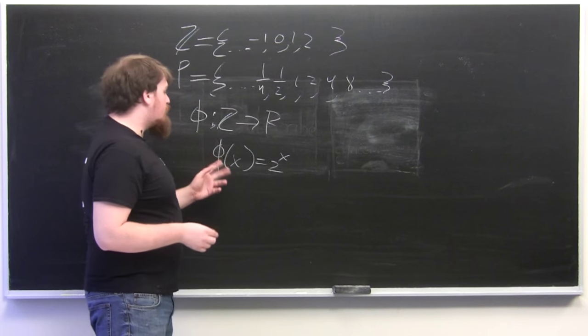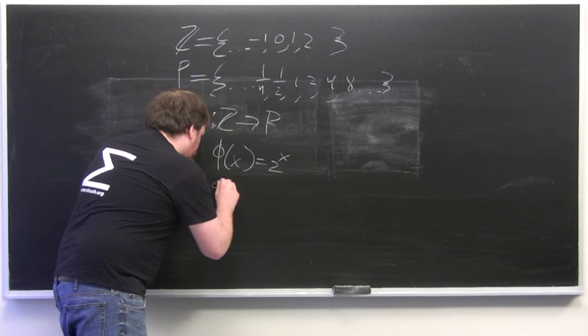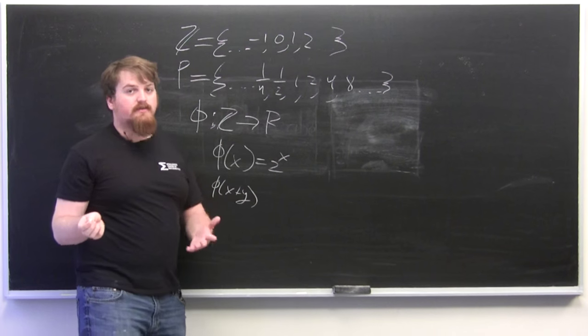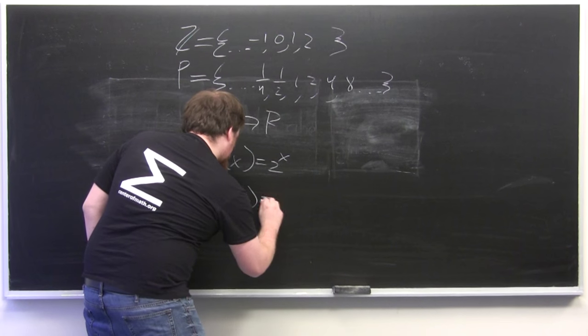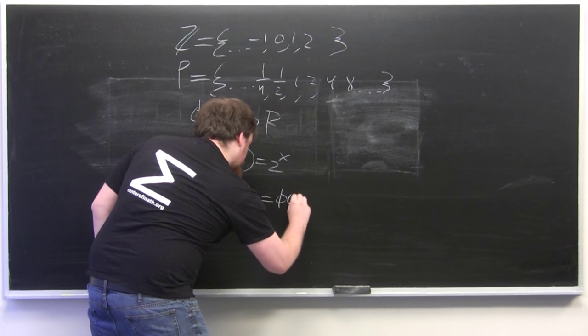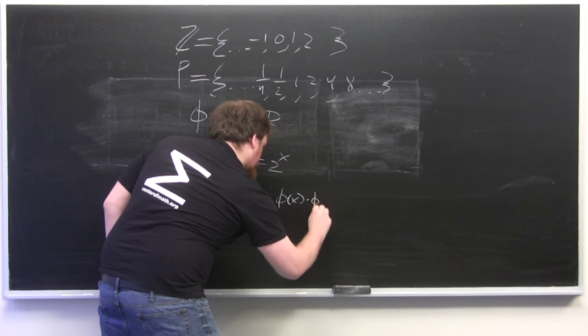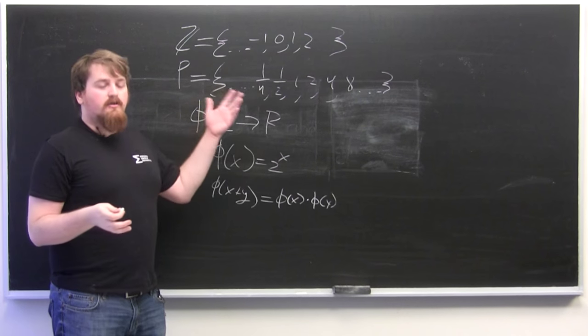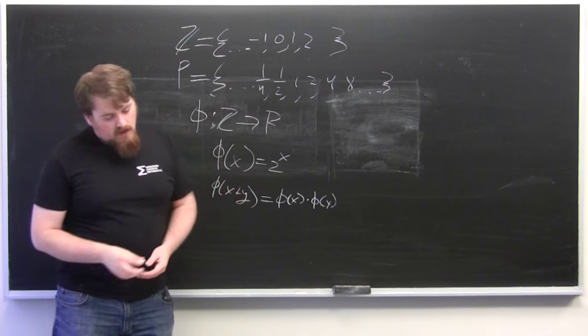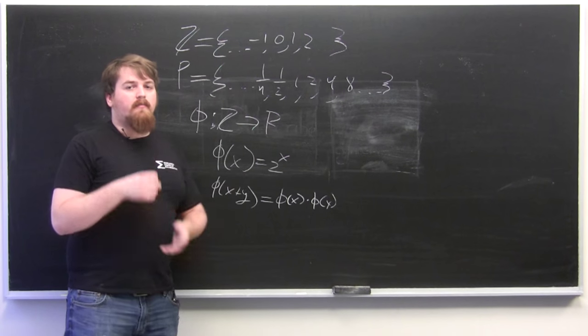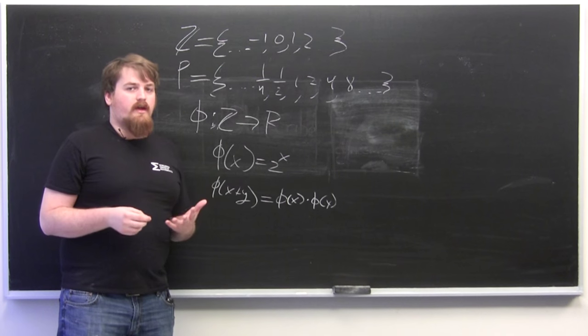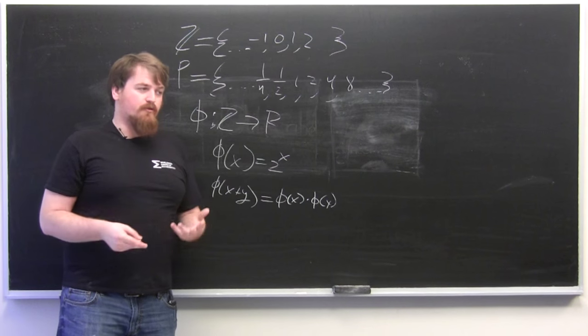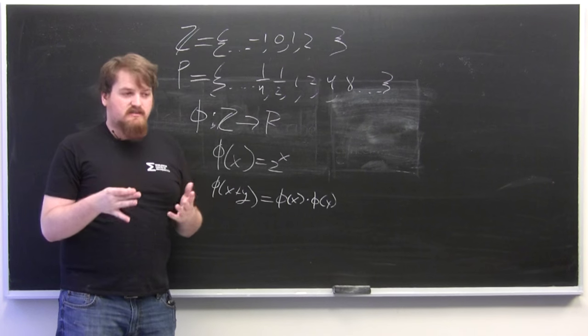So the function phi has the property that phi of x plus y for any x and y in the integers is equal to phi of x times phi of y under the multiplication of P. Now this preservation of structure is the main property of a group isomorphism. So Z and P are what are formerly called isomorphic groups and the function phi between them is the isomorphism.